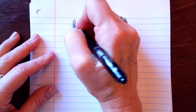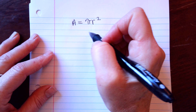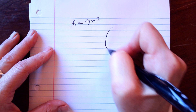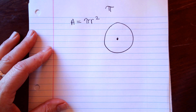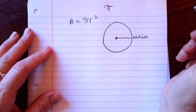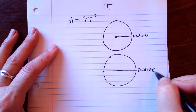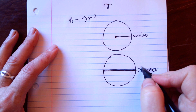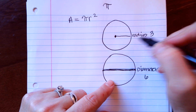For area, you figure out what shape you're doing and then apply that formula. The area of a circle is pi r squared. Here's a circle — the radius is this right here. Sometimes they give you the radius, sometimes they give you the diameter. The diameter is the whole inside part through the middle of the circle. If the diameter is six, then the radius is three — the radius is always half of the diameter.